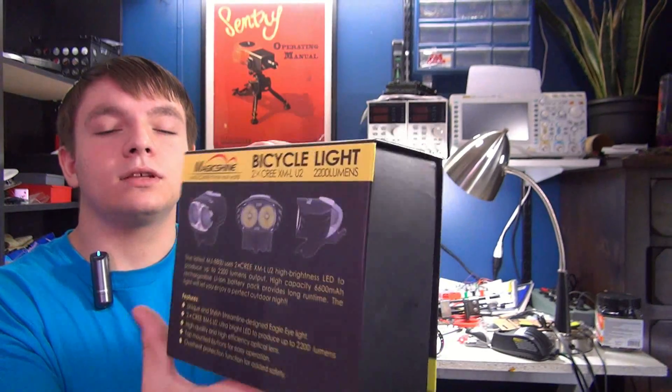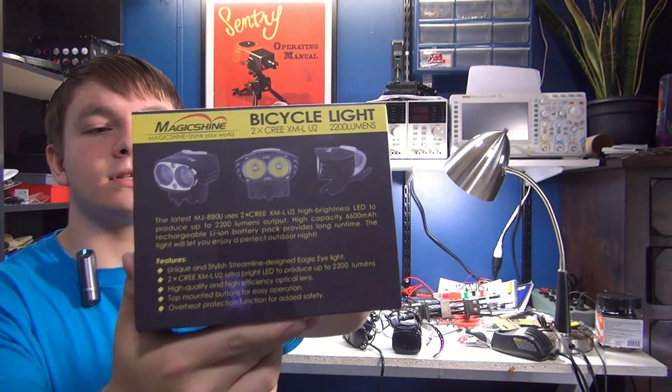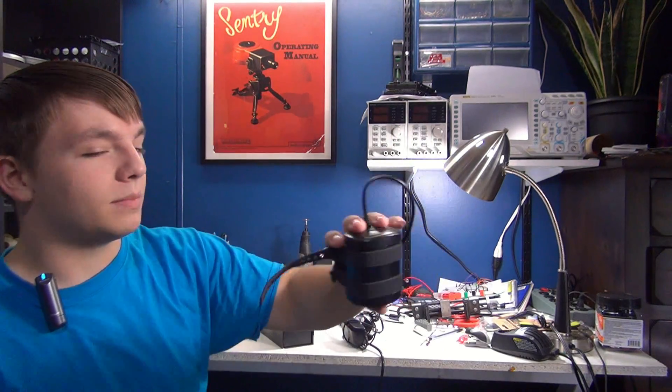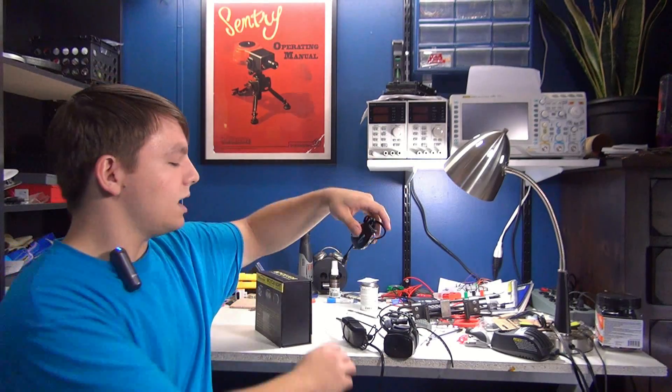The dual headlights together have a claimed output of 2200 lumens, with a battery pack claimed at 6600 mAh. We're going to tear down the bicycle battery pack, the headlamp, and the AC charger.